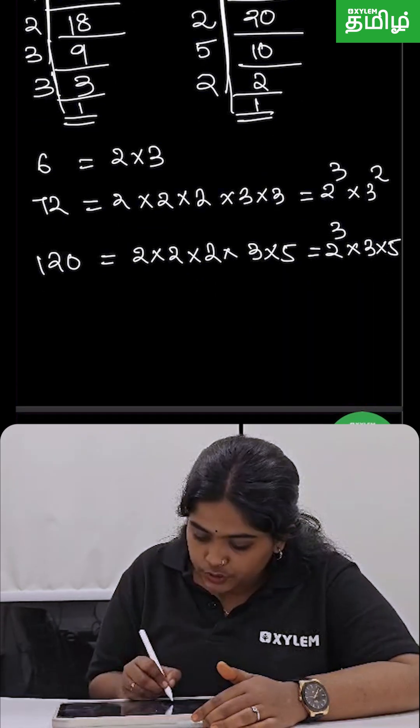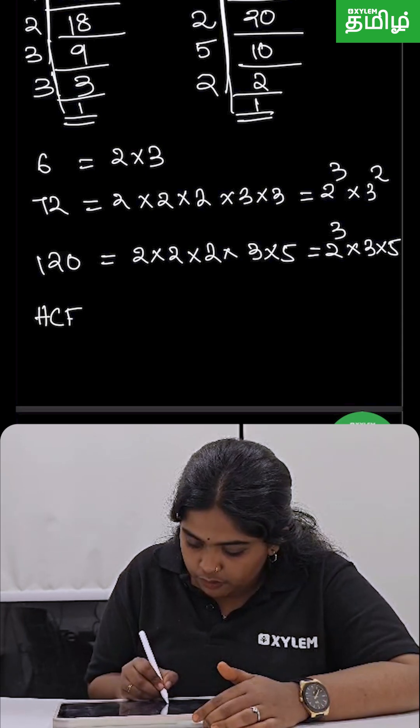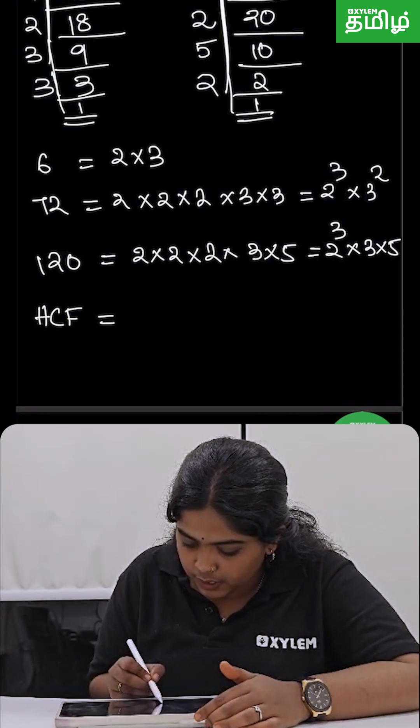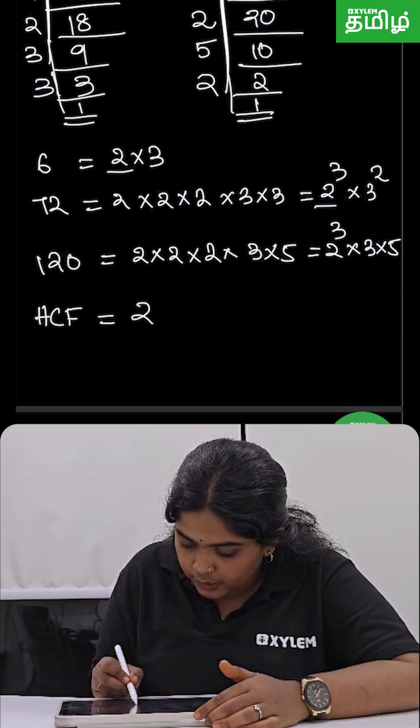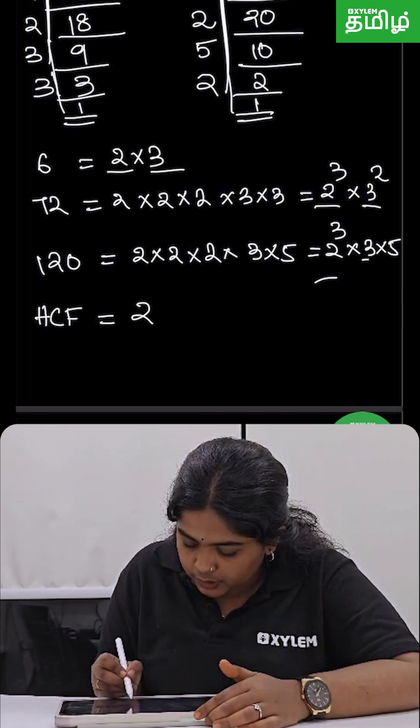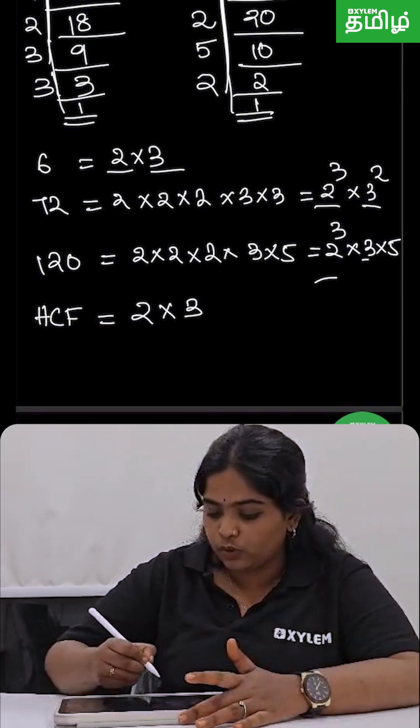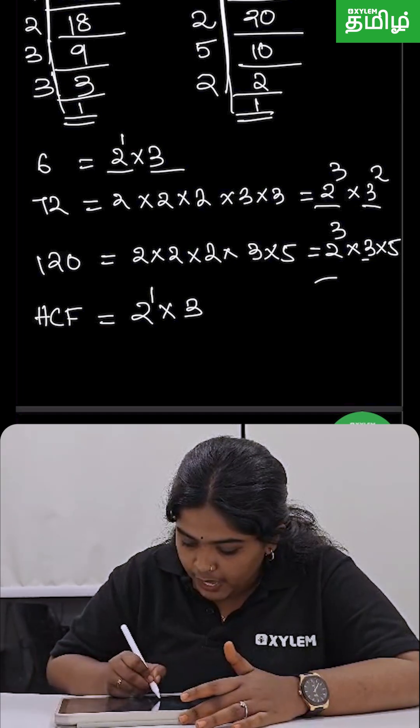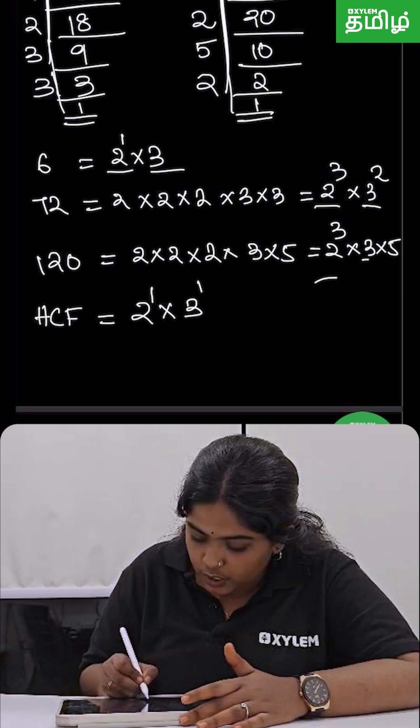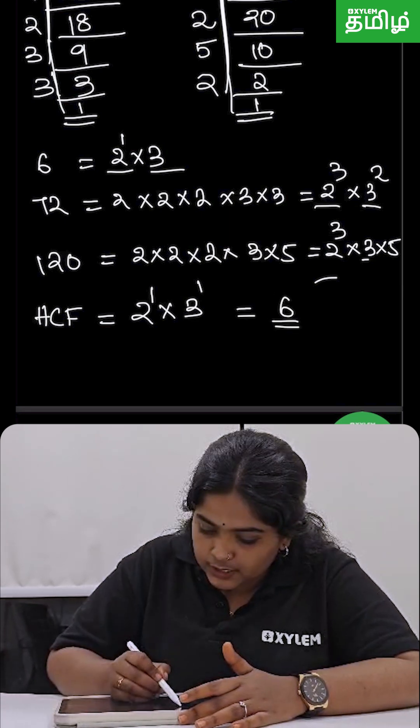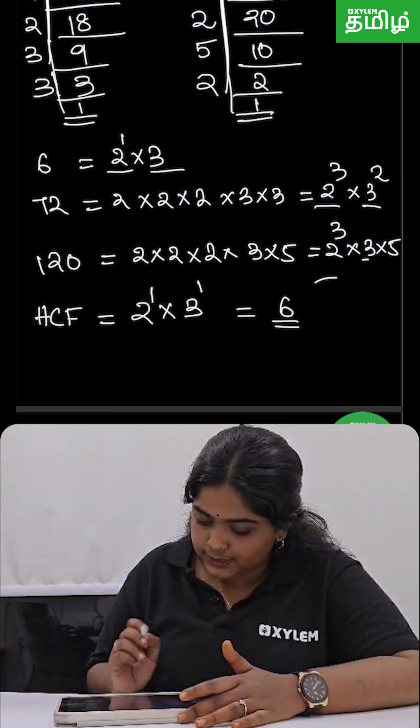Okay, so HCF uses factors with lowest power. So the common factors are 2 and 3. So 2 and 3 are the factors. Now we take the least power. So 2's least power is 1 and 3's least power is 1. So 2 into 3 is 6. So the HCF of 6, 72 and 120 is 6.